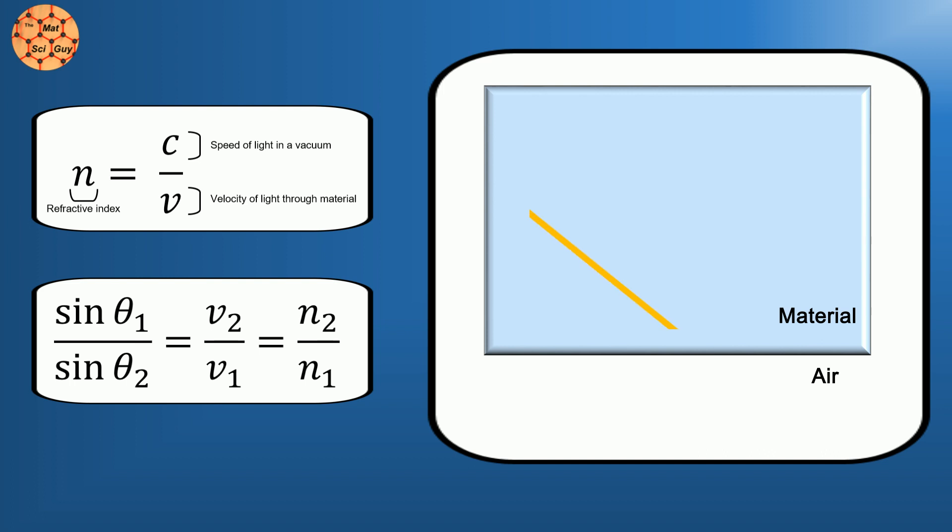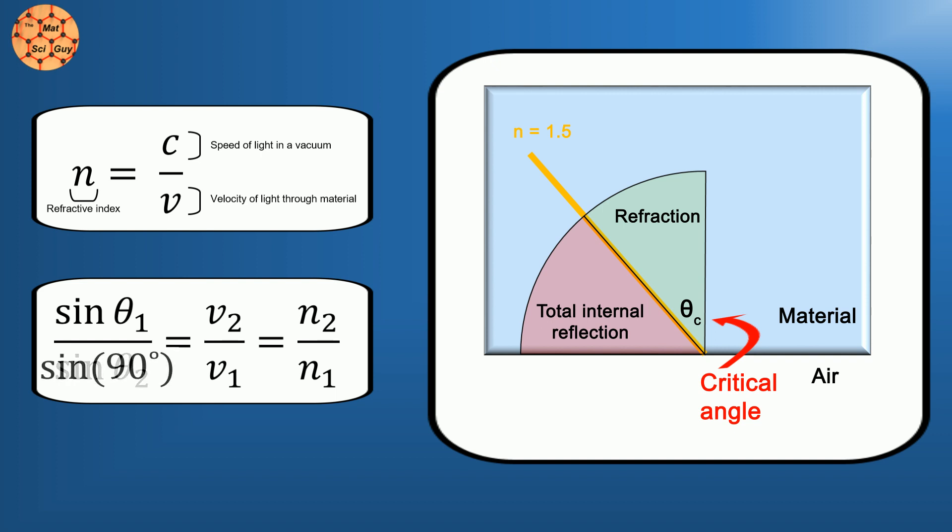it gets reflected at the boundary. The angle where this transition occurs is known as the critical angle. At angles smaller than this, total internal reflection takes place. Mathematically, this can be found by simply setting theta 2 as 90 degrees in Snell's Law, since that's the definition of light staying in the material, with N1 in this case being the material.